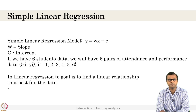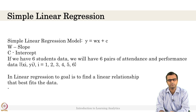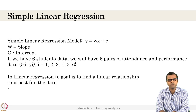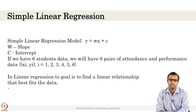In simple linear regression we consider one independent variable and one dependent variable. The generic formula is y = w·x + c, also written as y = m·x + c, like the slope equation from school. Here y is the performance you are predicting, w is the weight (slope) associated with x (attendance), and c is the intercept. Consider 6 students' data — attendance percentage paired with their performance. For example, student 1 has 80% attendance and 60 marks. The goal of linear regression is to find the line that best fits this data.